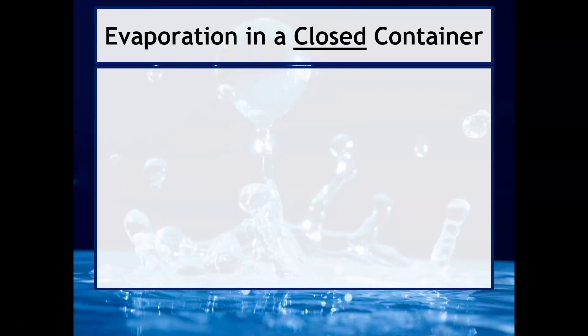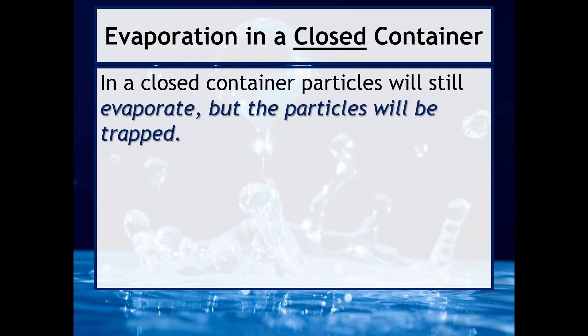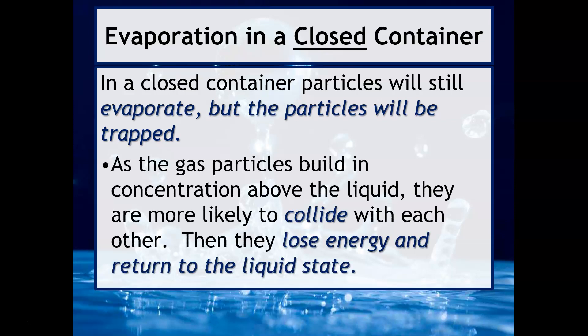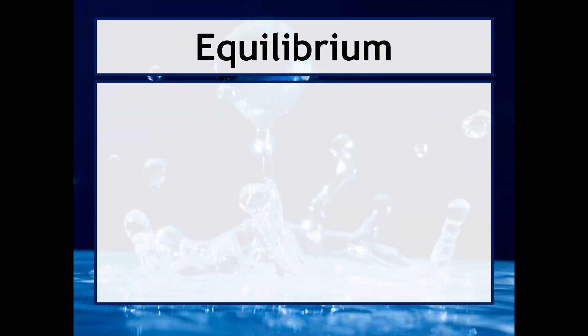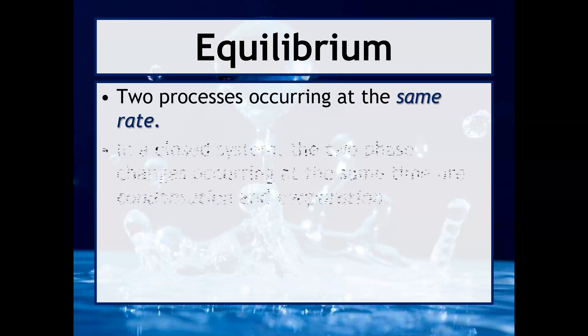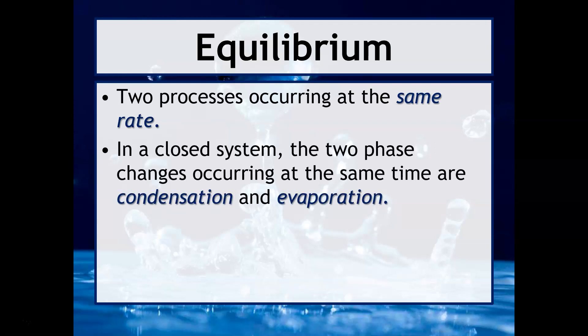If evaporation occurs in a closed container, the particles still evaporate but are trapped — they can't escape. As gas particles build in concentration above the liquid, they are more likely to collide with each other. Since particle collisions are elastic and energy can be transferred but never lost, one particle will transfer energy to another, and that other particle loses its energy and falls back into the liquid state. We say that equilibrium is reached — equilibrium is a term for two processes occurring at the same rate. In a closed system, condensation and evaporation are occurring at the same time: liquid in, say, a water bottle converts to gas, and those gas particles reconvert back into liquid — that is condensation.